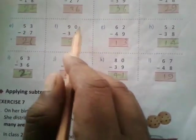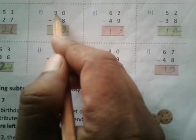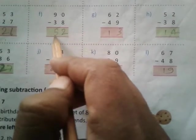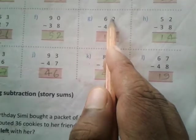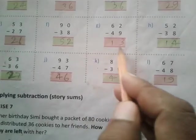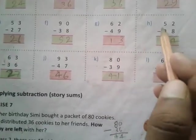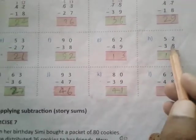53 subtract 27. 13 subtract 7 is 6, 4 subtract 2 is 2, equals 26. F: 90 subtract 38. 10 subtract 8 is 2, 8 subtract 3 is 5, equals 52. G: 62 subtract 49. 12 subtract 9 is 3, 5 subtract 4 is 1, equals 13. H: